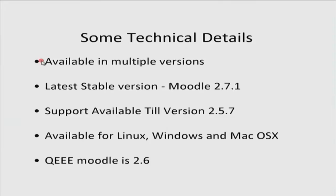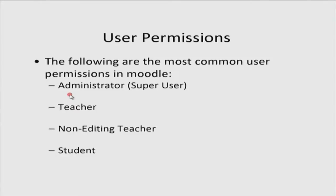Some technical details: Moodle is available in multiple versions. The latest one being 2.7.1, and the Moodle team supports versions till 2.5.7. It is available for Linux, Windows, and Mac OS X. The QEEE Moodle that you are using is version 2.6. An important thing in Moodle is to set up user permissions. There are 4 main levels: the administrator or super user, the teacher, non-editing teachers or TAs, and the student.